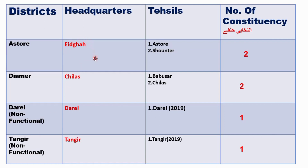Headquarters: Astor's headquarters is Idgah, Diyamar's is Chilas, Daryl's is Daryl, and Tangir's is Tangir. Tehsils in Astor: Astor Tehsil and Chantar Tehsil. In Diyamar: Tehsil Babusar and Tehsil Chilas. In Daryl: only one — Daryl Tehsil. In Tangir: only one — Tangir Tehsil.